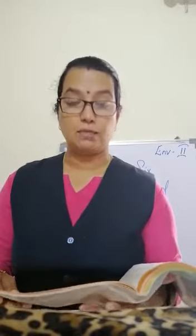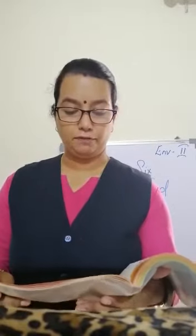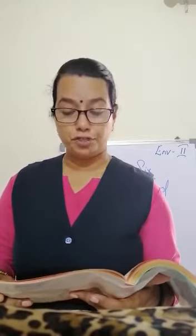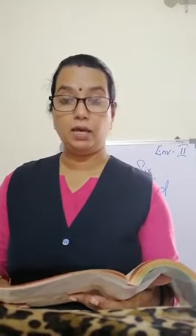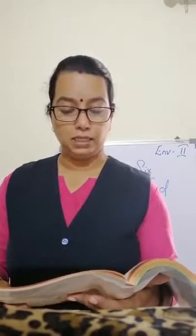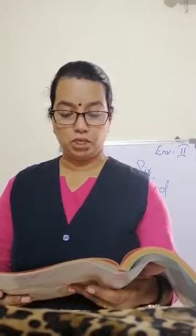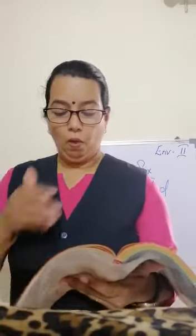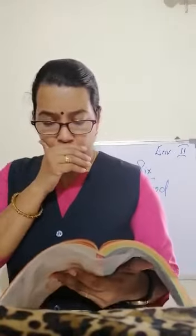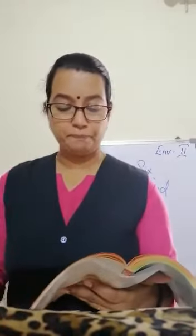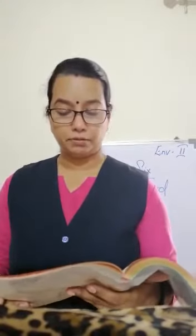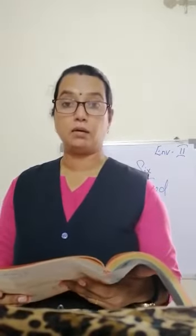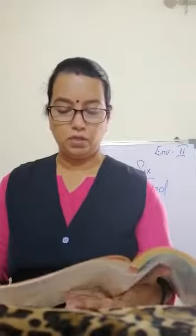The next group is body-building food. Food items like milk, fish, meat, egg, pulses, green peas, and chicken help us to grow. They make our bones and muscles strong. These food items are called body-building foods.